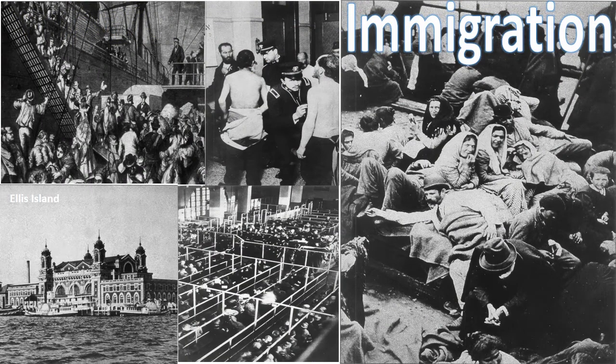Most immigrant groups that had formerly come to America by choice seemed distinct, but in fact had many similarities. Most had come from Northern and Western Europe, had some experience with representative democracy, and most were Protestant, with the exception of the Irish. Many were literate, and some possessed a fair degree of wealth. The new groups arriving by the boatload in the Gilded Age were characterized by few of these traits. Their nationalities included Greek, Italian, Polish, Slovak, Serb, Russian, Croat, and others.